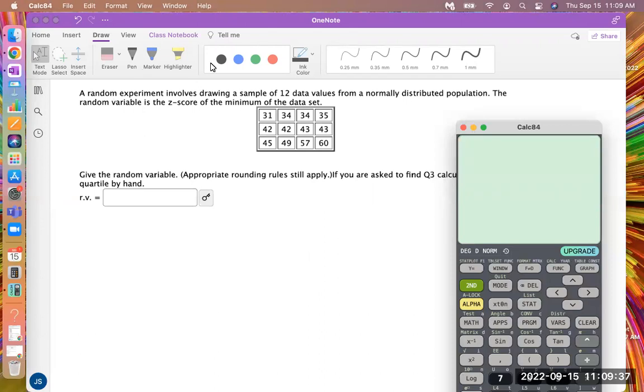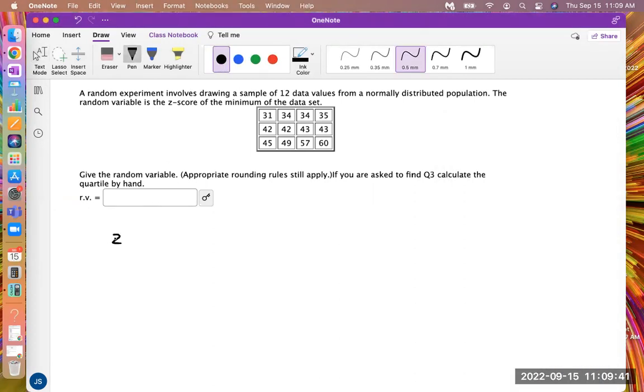So we have to remember the equation defined as z-score, and that is you take the data value of interest, the one that you're trying to find the z-score for. That's where we're going to plug it in for x, and you subtract the mean of the set. We're talking about sample data here, so sample mean. There's a sample of 12. And then we divide by the standard deviation.